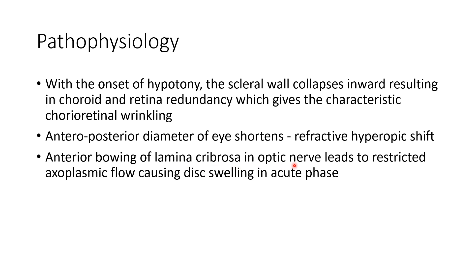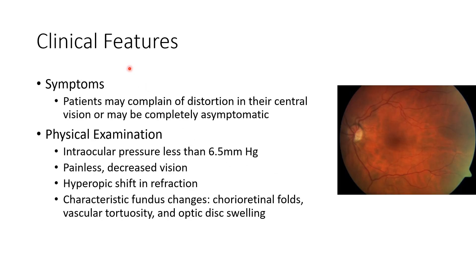The anteroposterior diameter of the eye shortens, leading to a refractive hyperopic shift. There will be anterior bowing of the lamina cribrosa in the optic nerve, which leads to restricted axoplasmic flow, causing disc swelling in the acute phase.